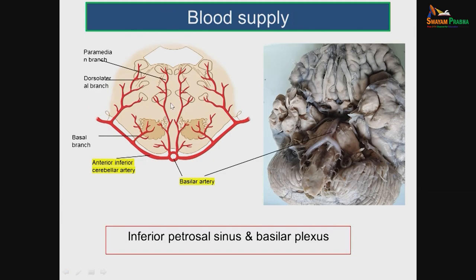The pons receives its blood supply mainly from the basilar artery and the anterior inferior cerebellar artery (AICA). The basilar artery is formed by the two vertebral arteries joining at the lower part of the pons. It runs in the sulcus basilaris and gives minute pontine branches. Venous drainage goes into the inferior petrosal sinus and the basilar venous plexus.